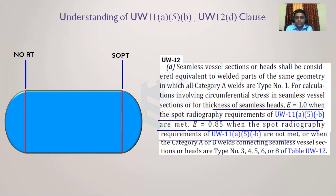E=0.85 applies when the spot radiography requirement of UW-11a5b is not met. For the right-hand seamless head with the junction spot radiographed, joint efficiency is 1. For the shell, spot radiography must be done on both sides; since it's done on only one side, joint efficiency cannot be 1. For the left-hand seamless head where no RT is done at the shell-to-head junction, joint efficiency is reduced — even though it's a seamless end cap with no inherent joint.